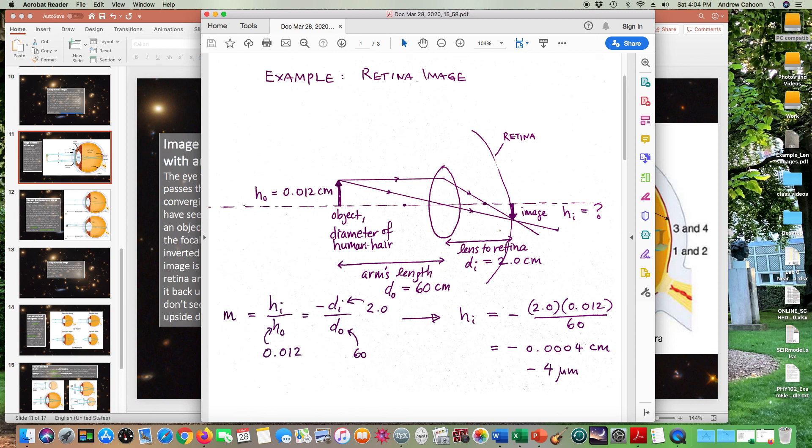So the object is a human hair. It has a diameter of 0.012 centimeters, so the size here represents the diameter of the human hair, and that's the object height, HO. What we'd like to know is the image height, HI. So that's what we're trying to figure out. We want to know what HI is.